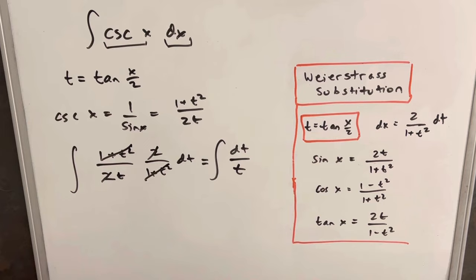So from here, we know what this is. That integral is just going to be ln of t, absolute value, plus c.